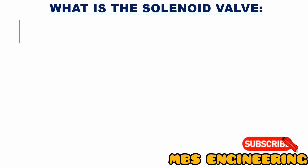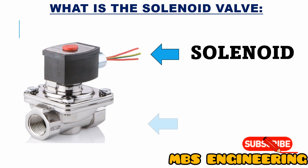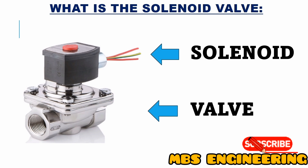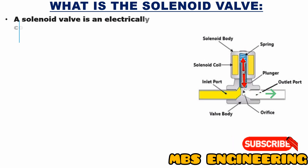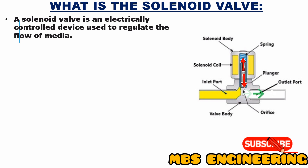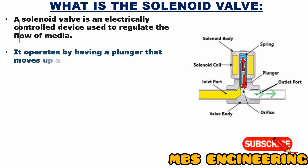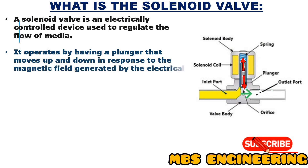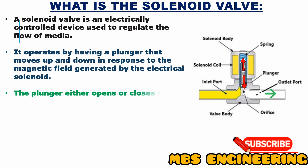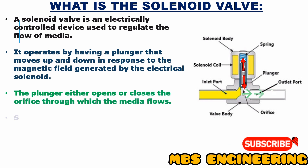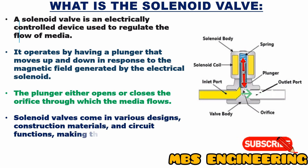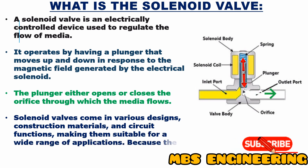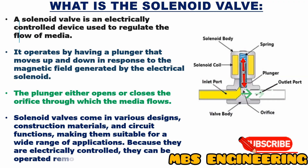Please refer to the picture. The top part is called the solenoid, and the bottom part is called the valve. A solenoid valve is an electrically controlled device used to regulate the flow of media. It operates by having a plunger that moves up and down in response to the magnetic field generated by the electrical solenoid. The plunger either opens or closes the orifice through which the media flows. Solenoid valves come in various designs, construction materials, and circuit functions, making them suitable for a wide range of applications. Because they are electrically controlled, they can be operated remotely and automatically.